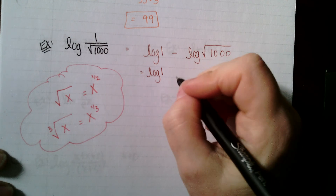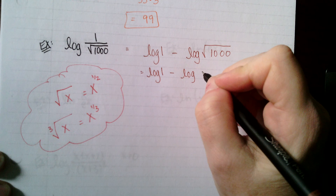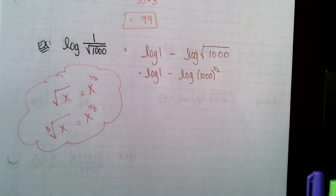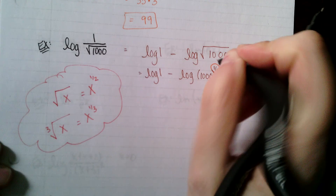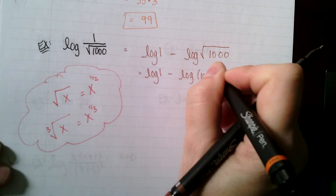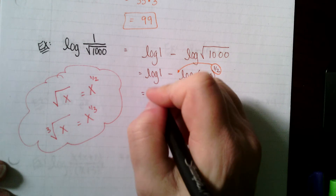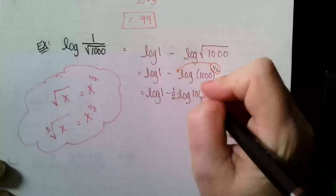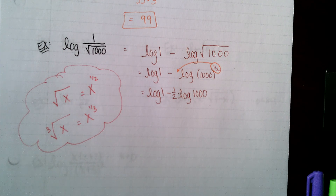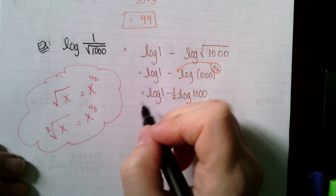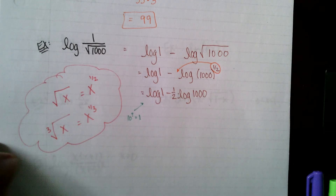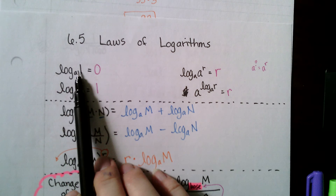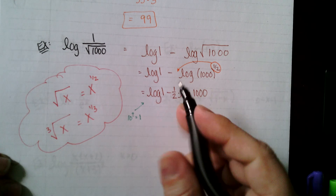I'll rewrite this as log of 1 minus log of 1000 raised to the one-half. Using the power property, I bring the one-half out front: log 1 minus one-half times log 1000. The first log asks: 10 to what power gives 1? That's one of our identities from the start of the lesson.